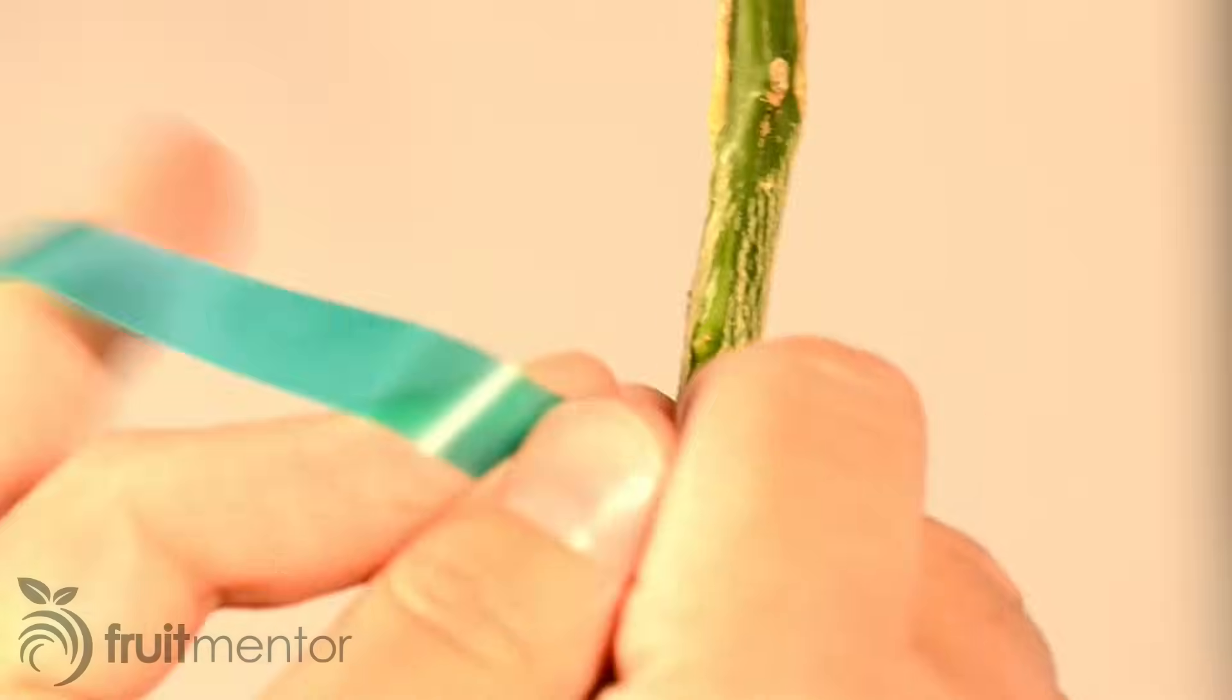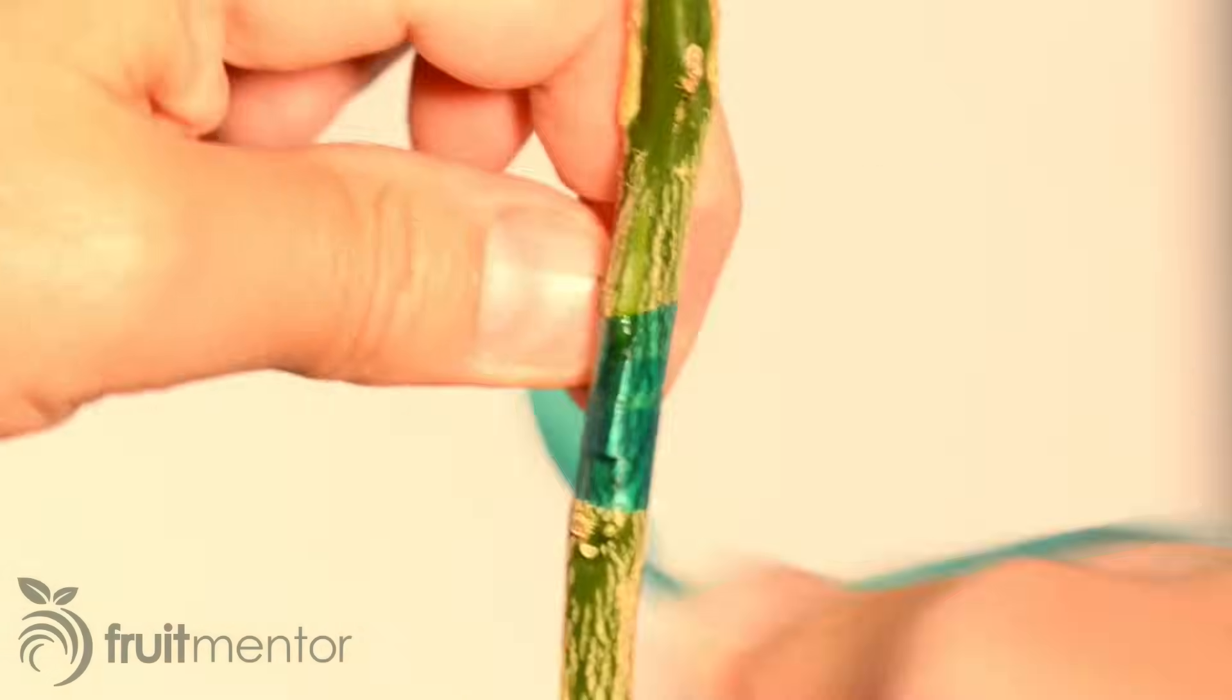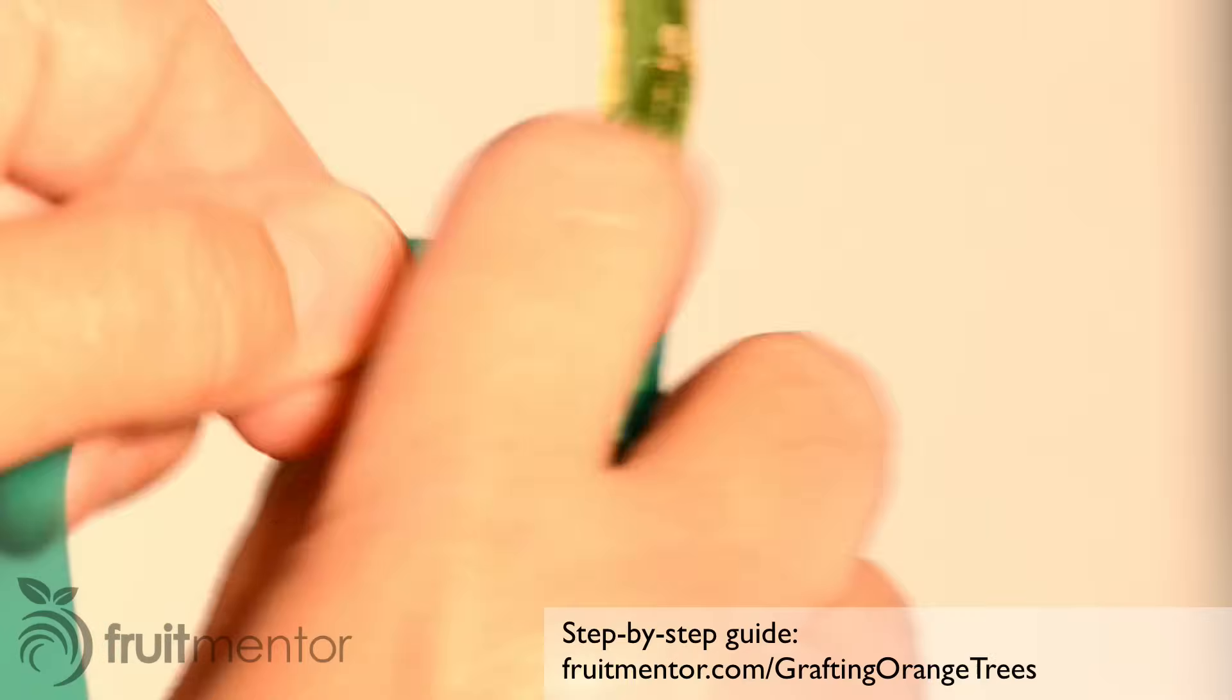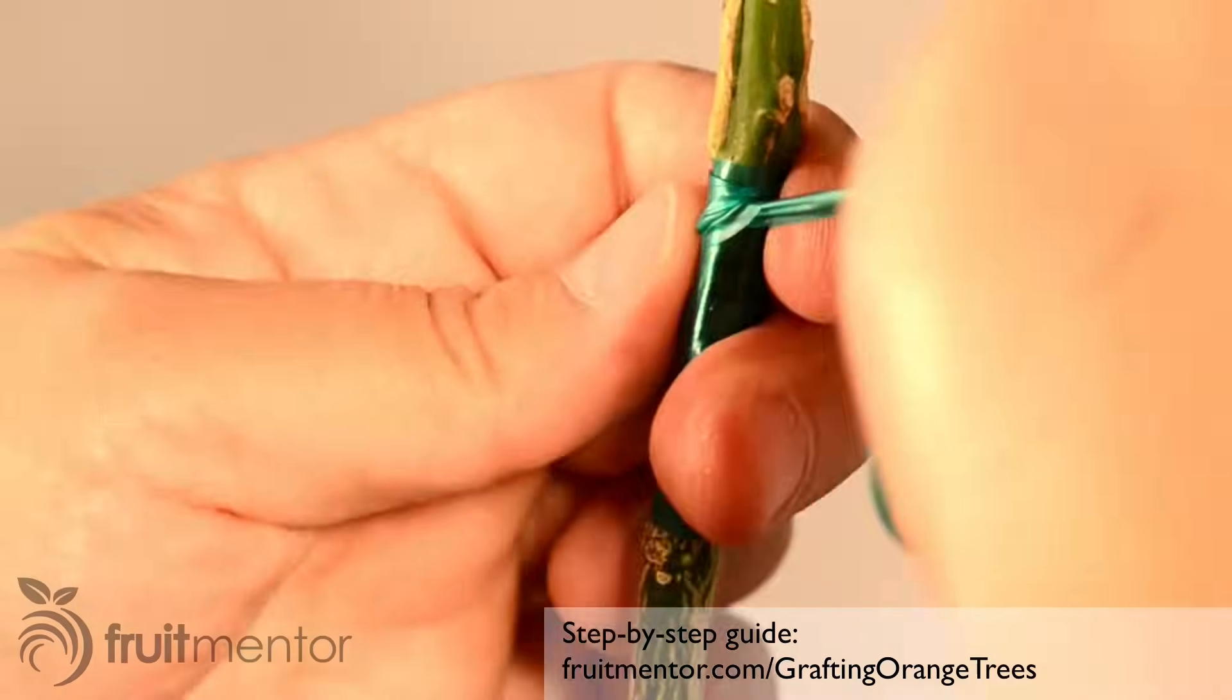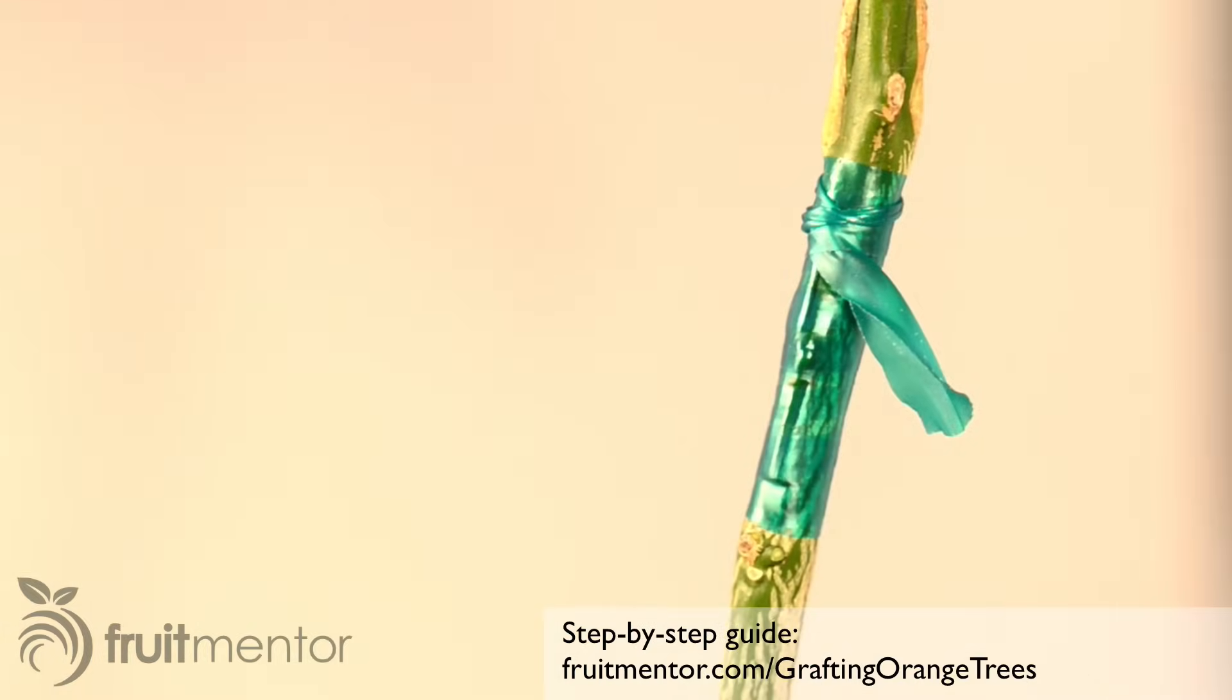Next, I wrap the bud tightly with vinyl tape starting below the bud and wrapping up. My step-by-step article at fruitmentor.com/graftingorangetrees has more information on wrapping material.